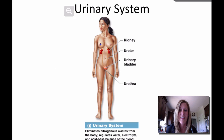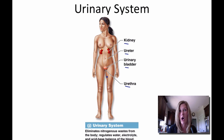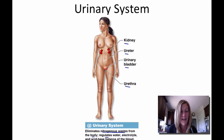The urinary system is made up of the kidneys, ureter, urinary bladder, and urethra. Note that the urethra in a female is very short, while in a male it is much longer. The major function of the urinary system is to eliminate nitrogenous waste from the body, and it also regulates water, electrolyte, and acid-base balance of the blood.